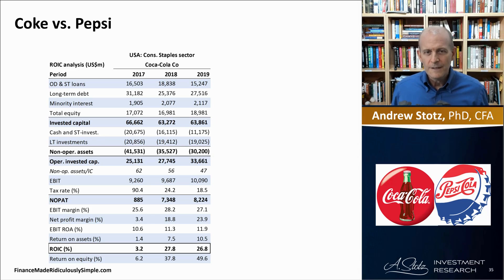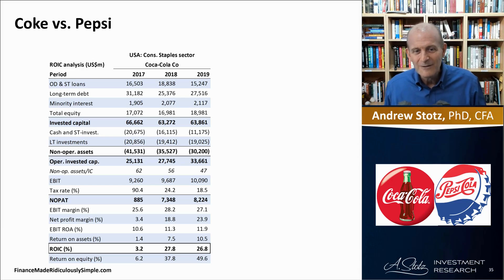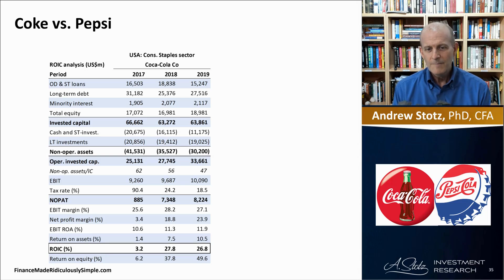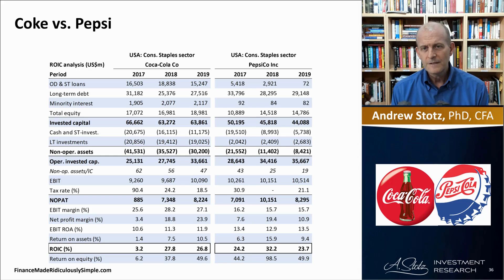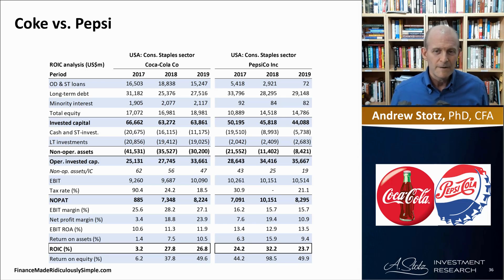For Coke, ROIC was distorted in 2017 at 3.2% because the calculated tax rate was 90%. We probably have to make a normalized tax assumption of about 20–25% in this case, which shows one of the challenges when calculating ROIC: what tax rate should you use — that year's, an average, or an expected future amount? These are questions analysts must consider. But Coke's ROIC was 26.8% in 2019. Pepsi had half the EBIT margin but an equal ROIC, showing that you can be lower in profitability but deploy less assets and therefore need less paid-up capital and debt to produce an almost equal ROIC. There are many roads to get to the same result.